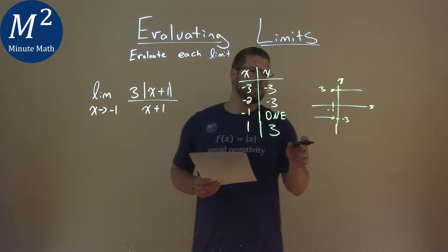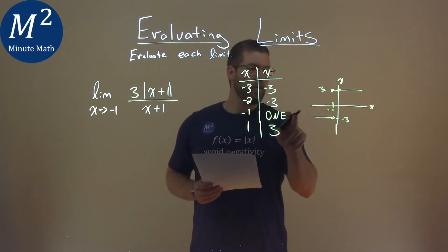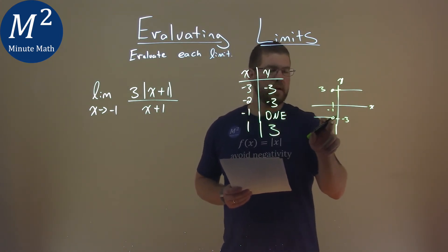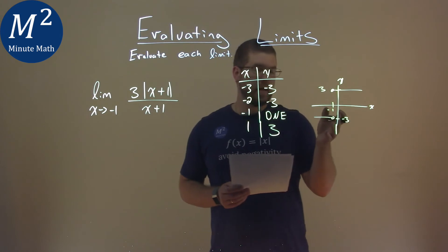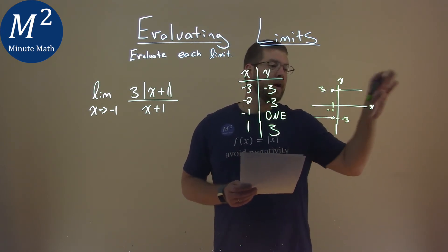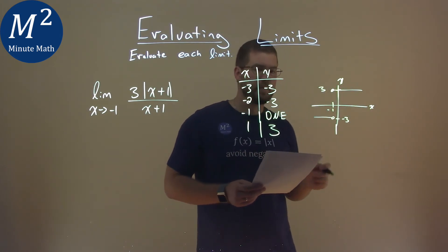So our function here is doing something where if we approach from the left, it's always going to be a negative 3, and then it hits, there's nothing there, a negative 1, and then it jumps. And then negative 1 greater than negative 1, it's a positive 3, okay?